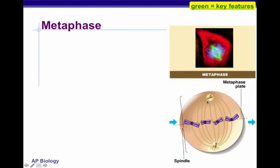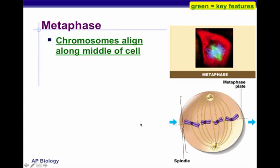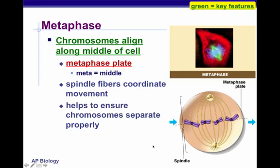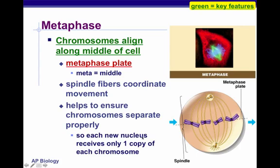In metaphase, the chromosomes are attached and they all line up at the equator — 'meta' meaning middle. Chromosomes align along the middle of the cell at the metaphase plate. The spindle fibers coordinate movement to ensure chromosomes separate properly. The goal is to separate chromosome 12A and 12B so that each new nucleus receives only one copy of each chromosome.